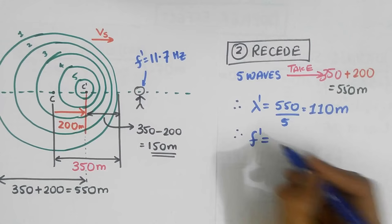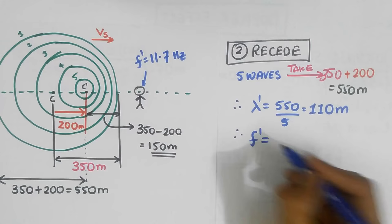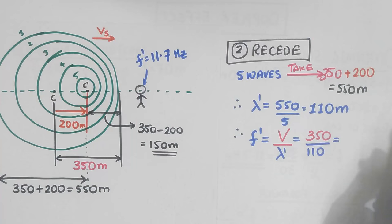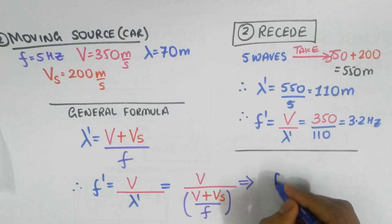And so, the registered frequency, F Prime, just becomes 350 divided by 110 equals 3.2 Hertz, a lower frequency. So, in general, F Prime equals F times V divided by V plus Vs.